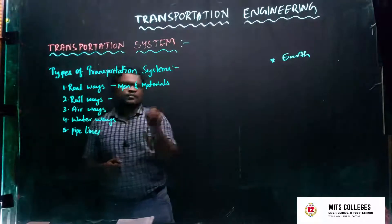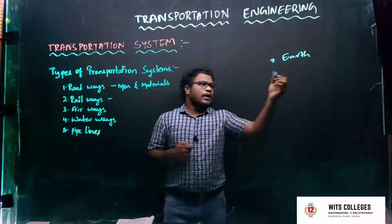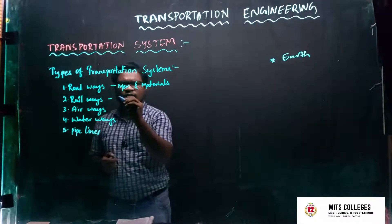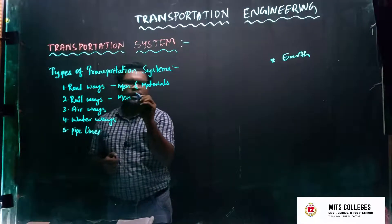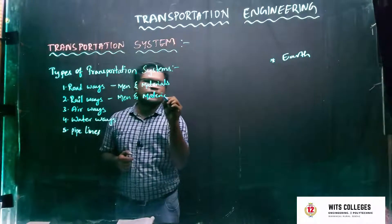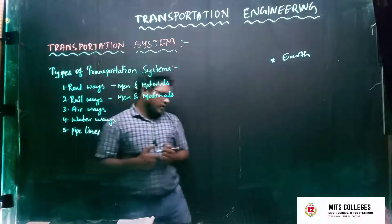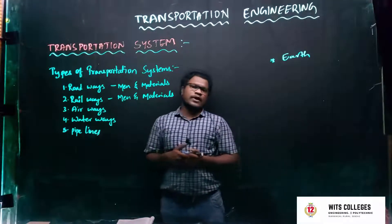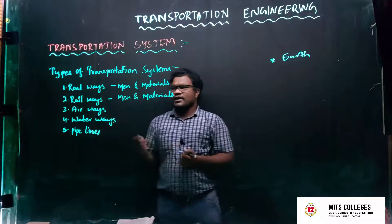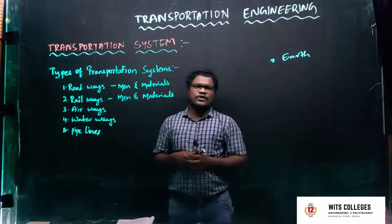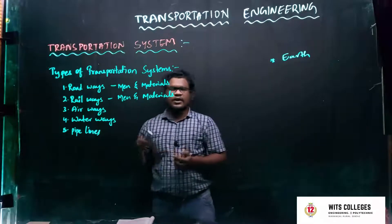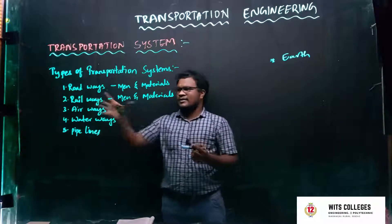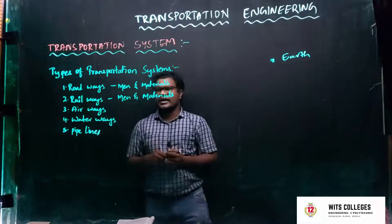The next one is railways. In railways, we can also transfer men and materials from one place to another place. But in railways there is a problem — we cannot connect to each and every corner of a place because it is limited to some places only. It requires more land for construction and movement of railways is not that easy. So there are some limitations in the rail transport system.